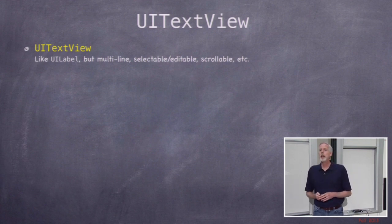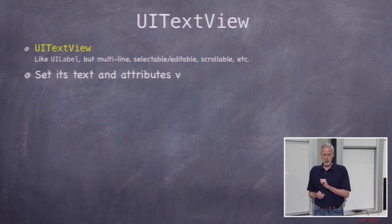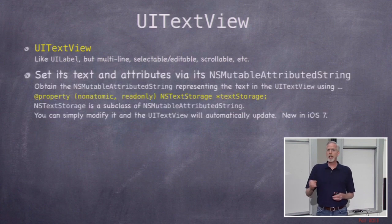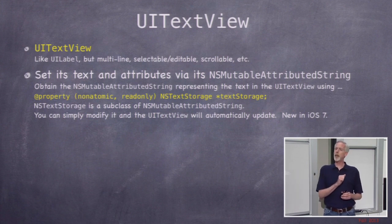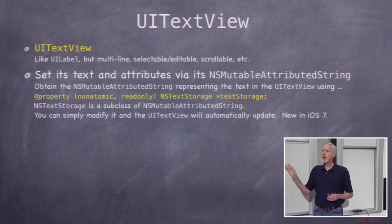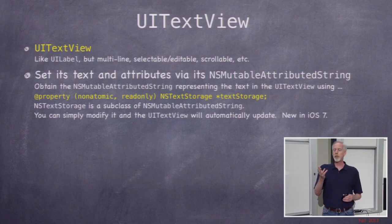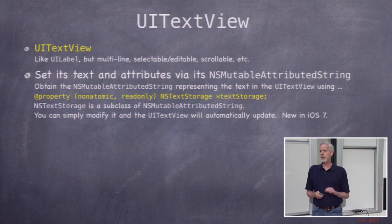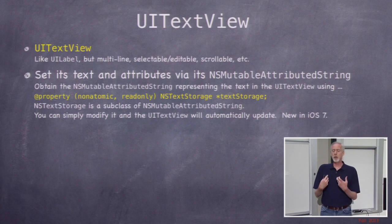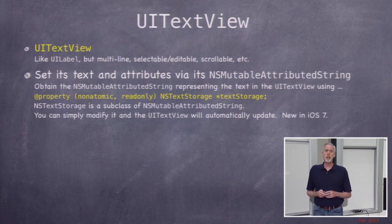UITextView is a super powerful object but very easy to use. It has a property called text storage, which is an NSTextStorage — a subclass of NSMutableAttributedString. You get this text storage and can just start setting attributes, or if it's editable, the user will start editing it and the attributes will just show up on this mutable string. This is new in iOS 7 — having a mutable attributed string vended like this by UITextView and editable on the fly by both the user and you is really incredibly awesome and easy to use.